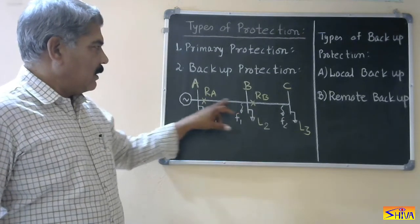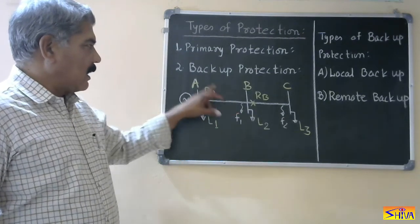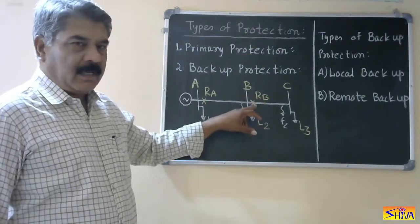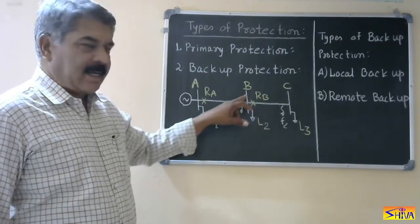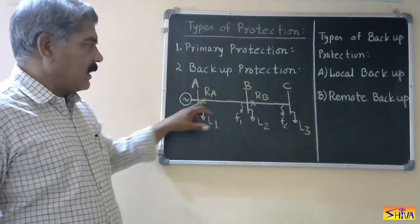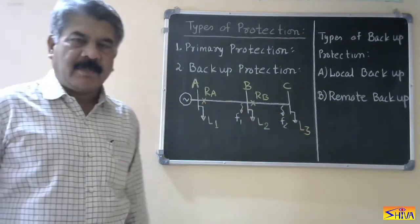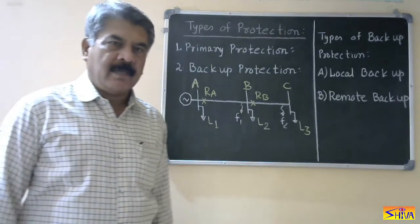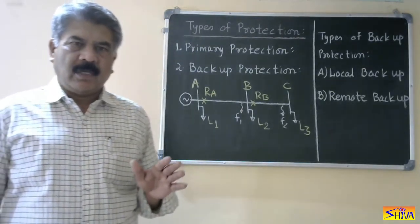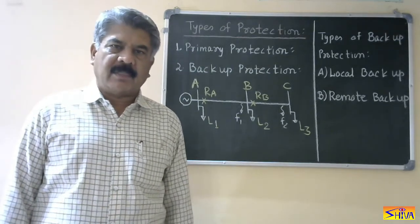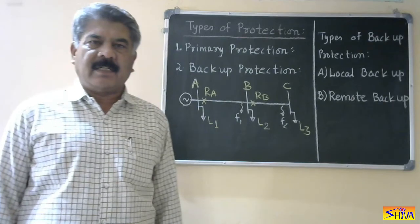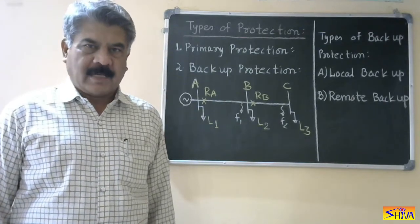For section A-B, relay R-A is used. For section B-C, relay R-B is used. So R-B is acting as primary protection to section B-C, and R-A is acting as primary protection to section A-B. Primary protection is provided to every equipment of the power system — it is the main, essential protection and it operates in the least possible time.